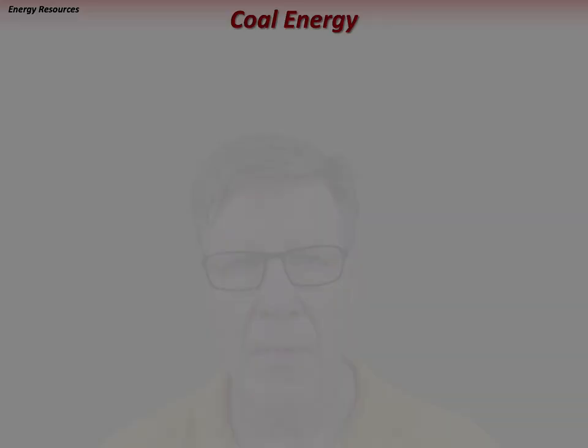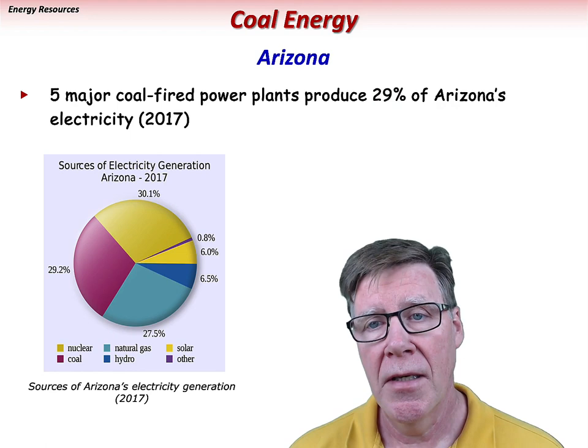As of 2017, five major coal-fired power plants produced around 29% of Arizona's electricity, including the 773-megawatt Coronado generating station near St. John's.